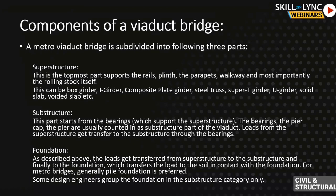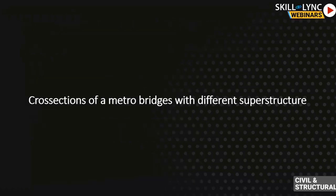Loads from the superstructure get transferred to the substructure through the bearings, then into the foundation, which distributes them to the surrounding earth — that is where the geotech role comes in. For metro bridges, pile foundation is preferred in 90 to 95 percent of cases. If the soil is very bad, the pile foundation length increases. Unless the metro crosses a river — in which case it can be a well foundation.